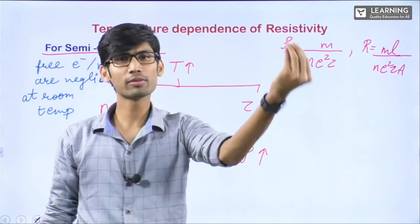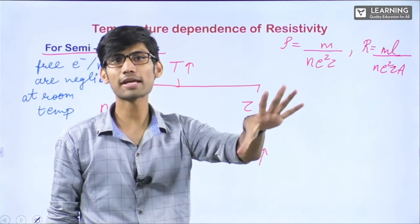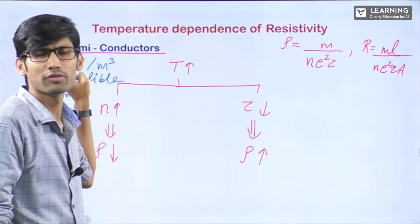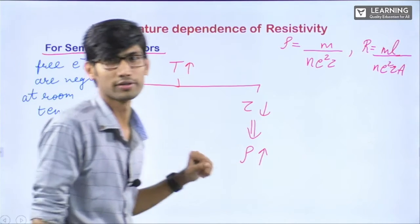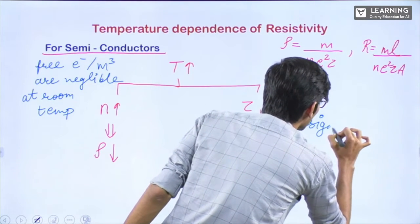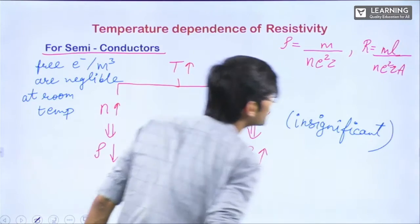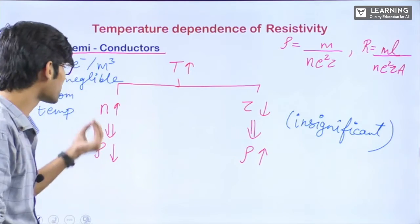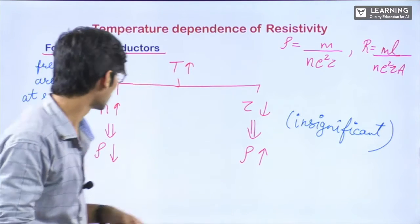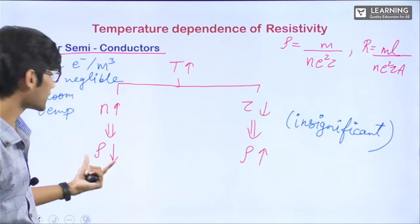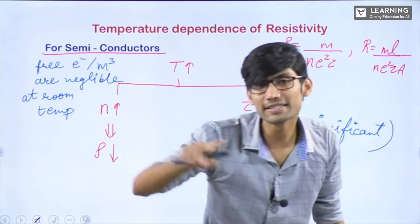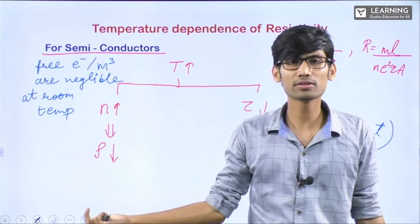Again using the same example: if one person is there in the room and I put nine more, it is ten people — ten times more, a significant increase. Similarly, for semiconductors, if there are very few electrons and some more electrons are added, it is a significant increase. So for semiconductors, on increasing the temperature, resistivity decreases. That means they are becoming conductors — not fully, but they become more conducting as we increase the temperature.